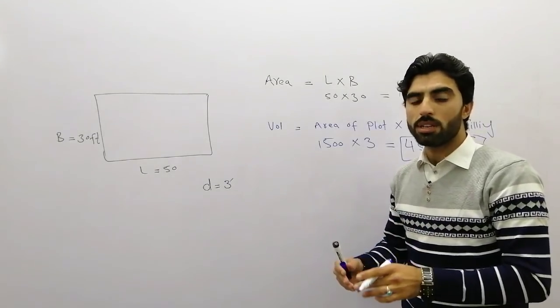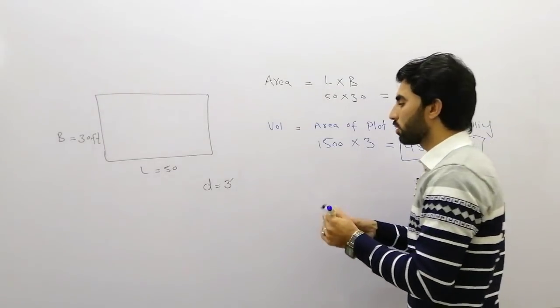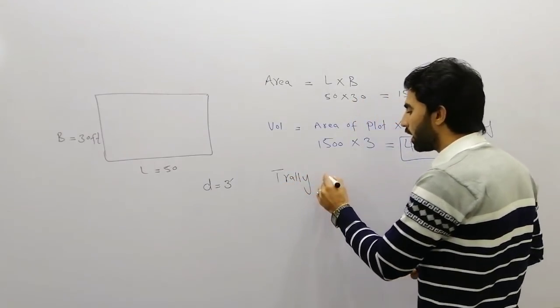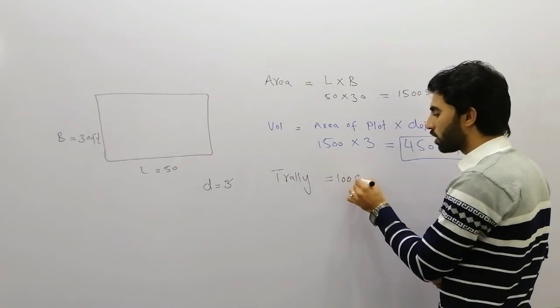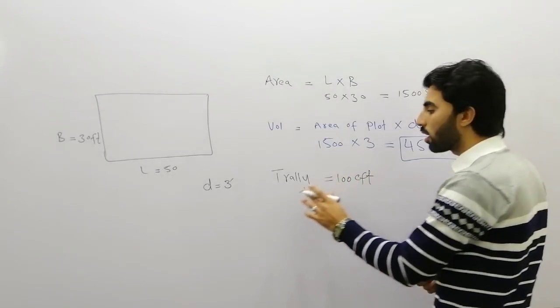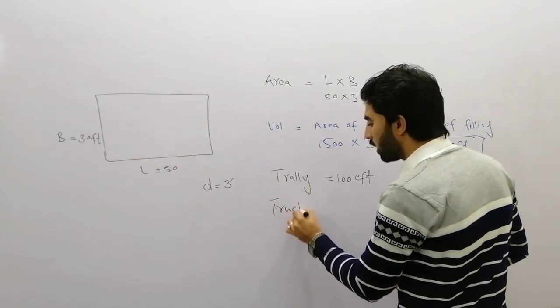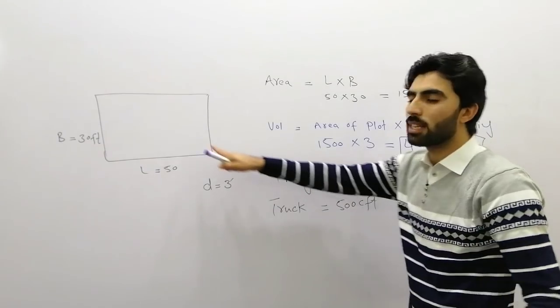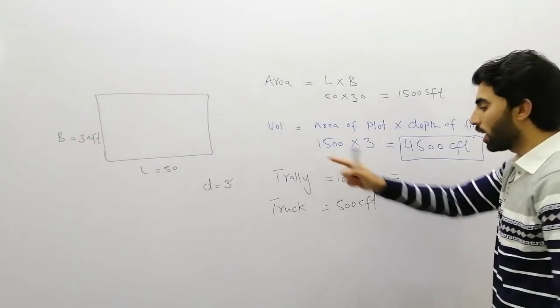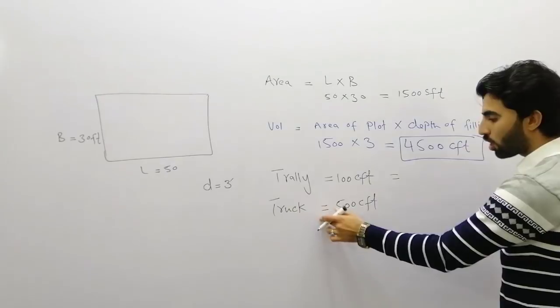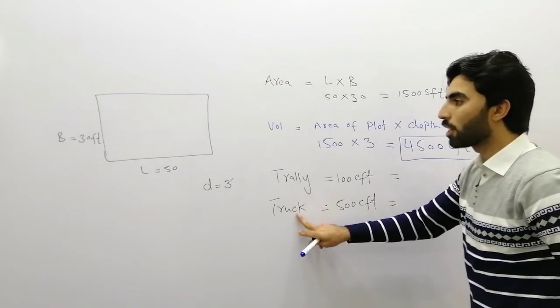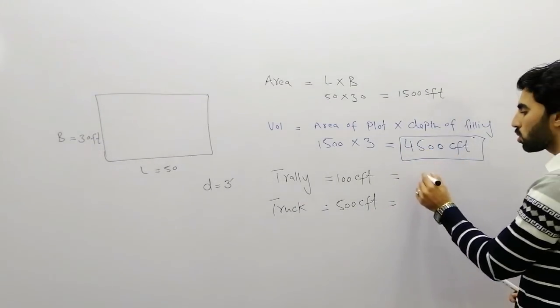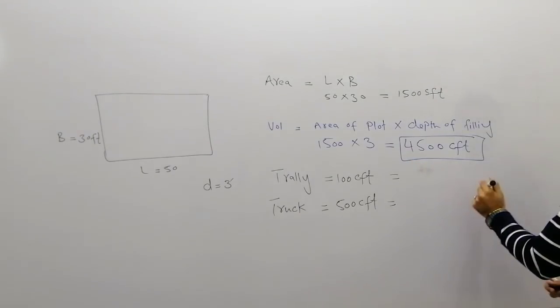Now how many trailers are required? Suppose one trailer can carry 100 cft or one truck can carry 500 cft. So how many trailers are required to fill this plot with material? This is very simple. Total is 4500.